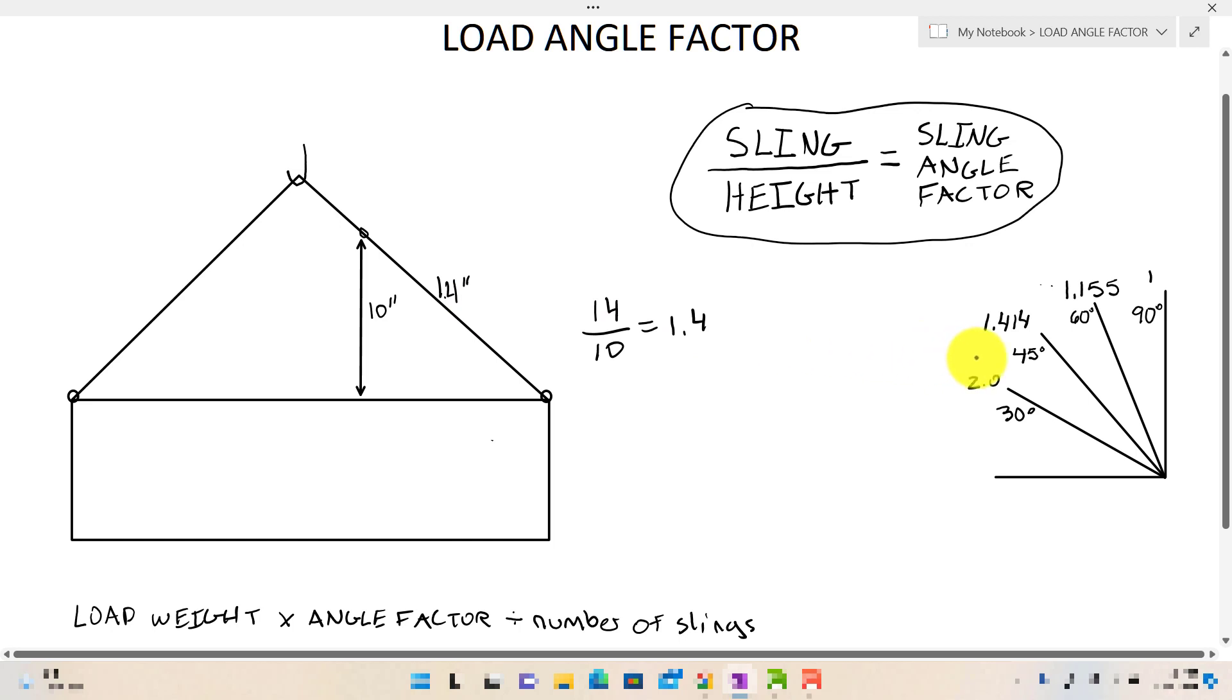So if we come over here to our chart, we can see that the load angle factor, as you've already learned for 45 degrees is 1.414. So the sling right here is roughly at a 45 degree angle. And from now, you simply take the load weight multiplied by the load angle factor, which is 1.4, divided by the number of slings. And that's how you're going to come up with your answer.